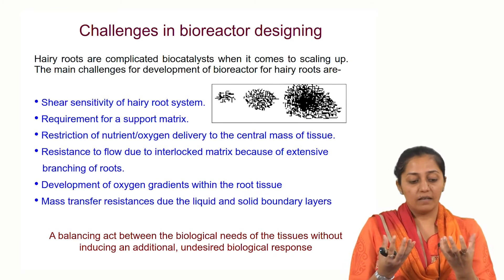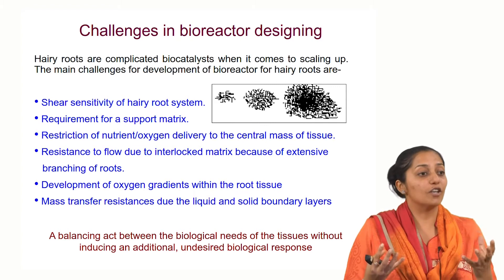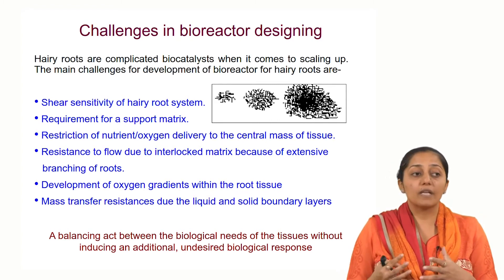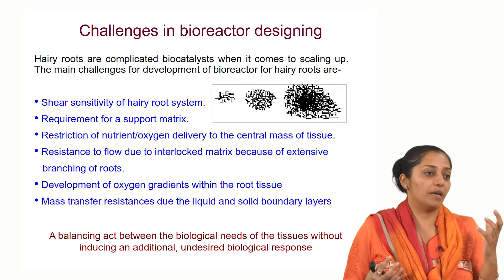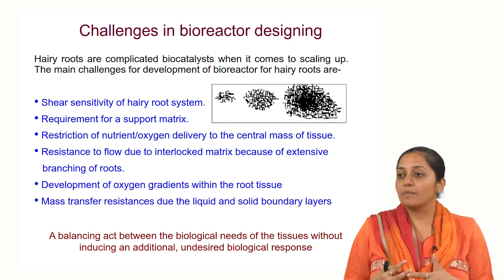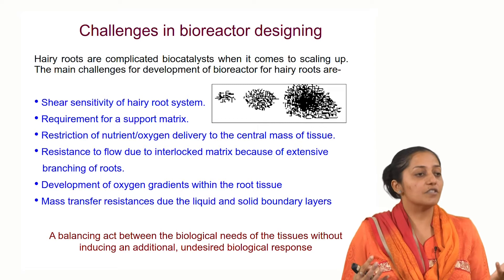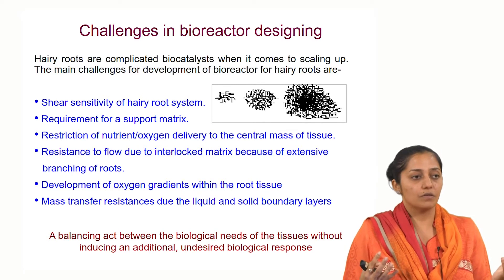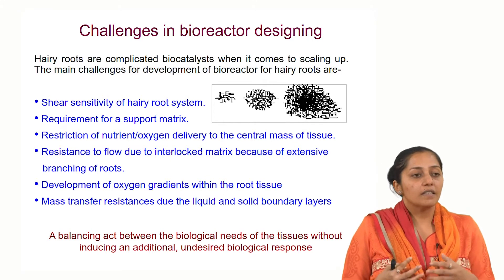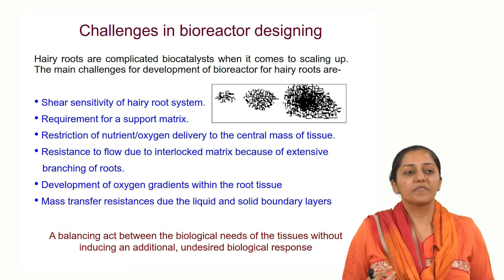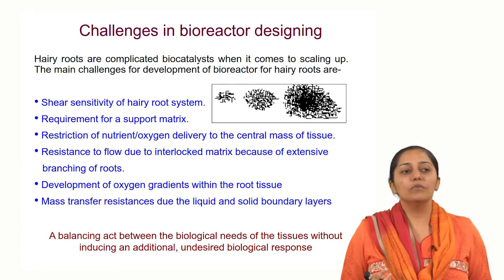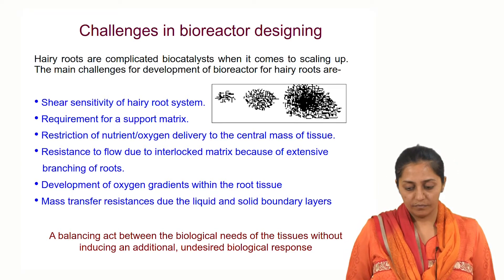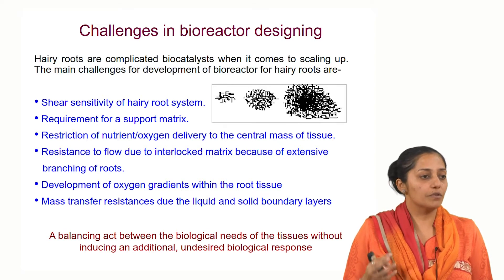We could clearly see the morphology completely changed. By adding gibberellic acid, what we observed was there were numerous meristems which came out. So more meristems, heavy branching — gibberellic acid is known to increase branching in root systems. Then because of heavy branching the morphology became thin, it became easier to scale up the system, and mass transfer limitations were also reduced.